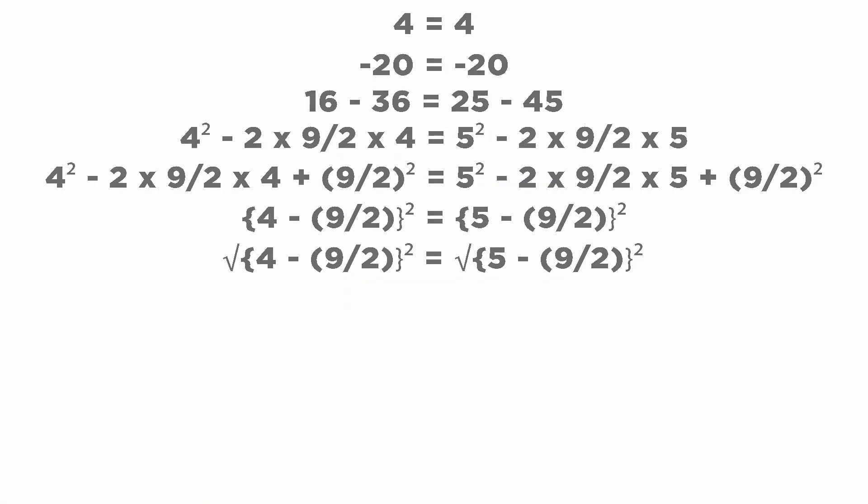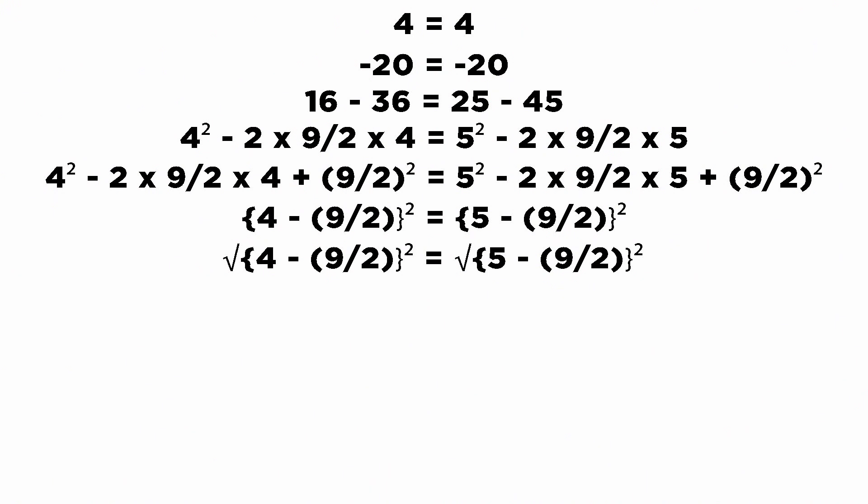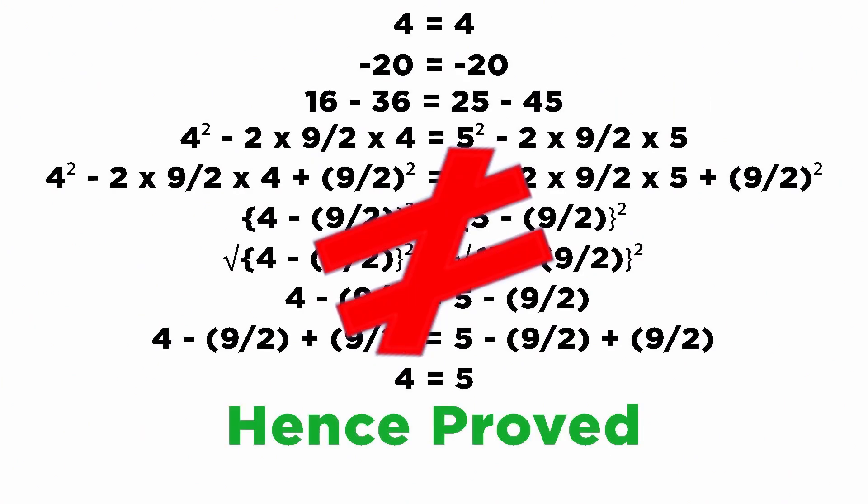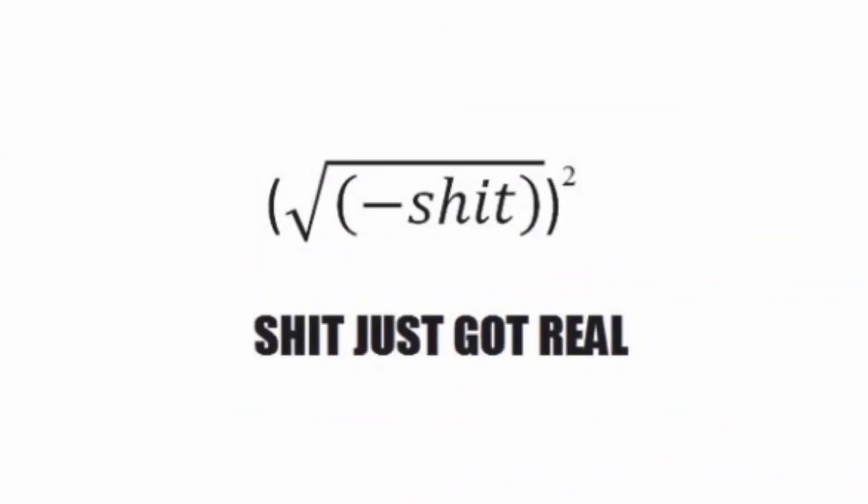Everything up to the square root step is perfect, but what do you get after you square root an equation? You get both positive and negative values, that is the mod of the equation, and this disproves the equality. Funny math!